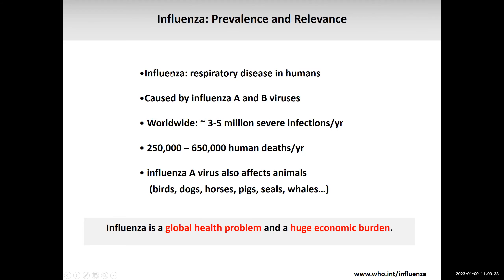You all know that influenza is a respiratory disease in humans caused by flu A and flu B viruses. For today we're only going to focus on flu A, which has zoonotic potential. We have about three to five million severe infections per year and up to 650,000 deaths per year according to WHO. This is a real burden on human health, and unfortunately it's also a problem in different animals — birds, dogs, horses, pigs — and especially large outbreaks in pig farms or chicken farms come with very high costs. So influenza is a global health problem and a huge economic burden.